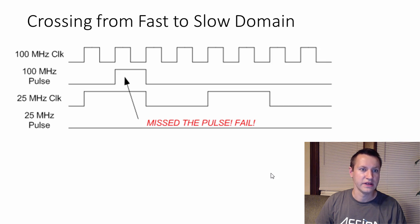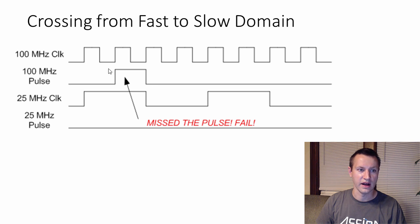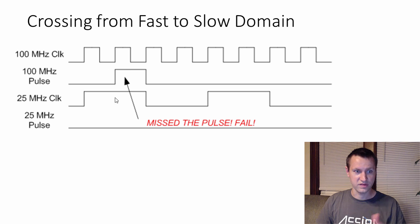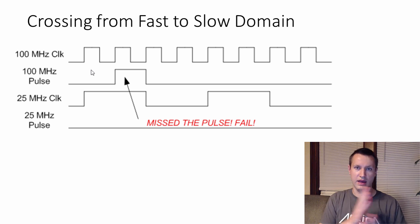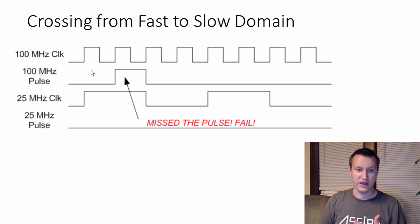Scenario two is crossing from the fast to slow. Let's say you have a pulse that happens at 100 megahertz, and you have a 25 megahertz clock trying to see that pulse. How can you guarantee that you can see the 100 megahertz pulse in the 25 megahertz clock domain? The only way would be if this pulse lined up right around the 25 megahertz rising edge, but there's no way to guarantee that. So you're going to miss it — it's pretty much guaranteed that at some point you're going to miss that pulse.